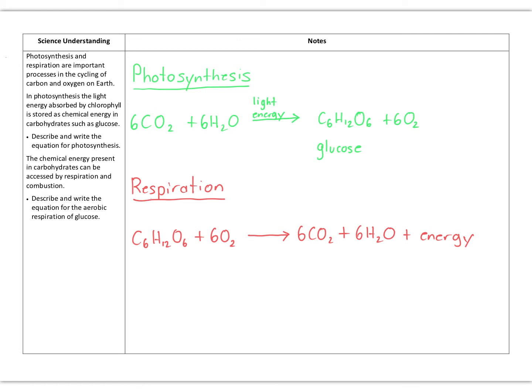The first part of this topic goes to two processes I think you would know very well. This is about photosynthesis and respiration. The dot points are: describe and write the equation for photosynthesis, and describe and write the equation for aerobic respiration of glucose.